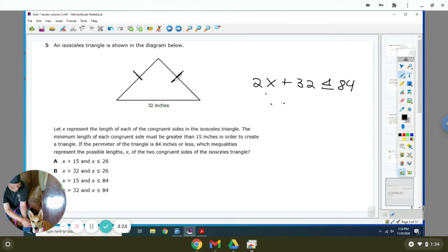So you can draw your line. And you subtract 32 from both sides. You get 2X is less than or equal to 52. And you divide 2 to both sides. And you get X is less than or equal to 26. So the solution could be A, because it has to be X is less than or equal to 26, but it also has to be greater than 15. This is the answer.